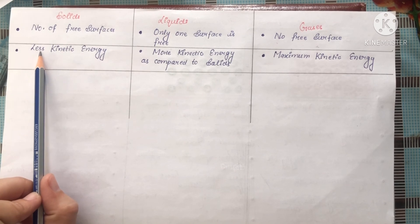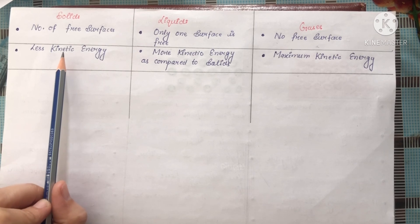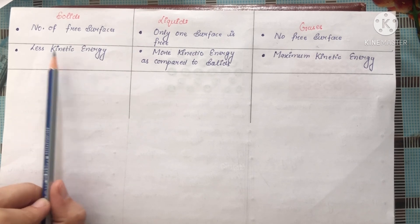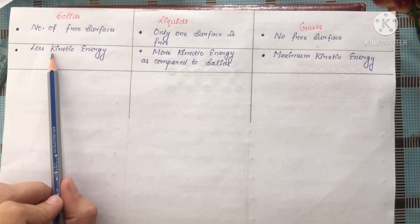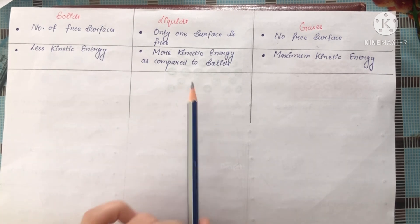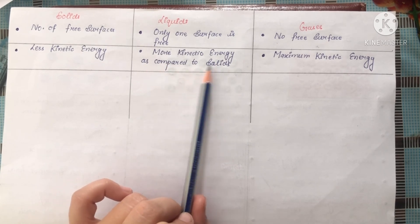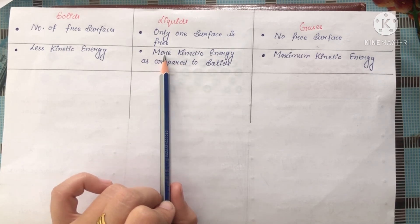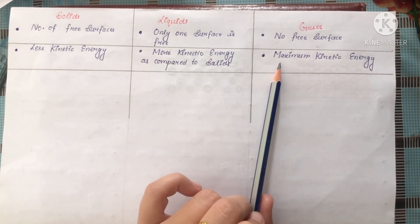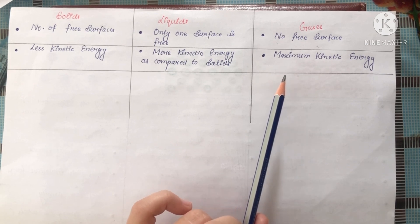In case of solids, there are less kinetic energies, and you know that kinetic energy deals with the motion of the particles. Solid particles do not move, so there are less kinetic energies in case of solids. In case of liquids, there are more kinetic energies as compared to that of the solids, because the liquid particles can move easily. In case of gases, there is maximum kinetic energy, because the gas molecules' movement is maximum as compared to that of the solids and liquids.